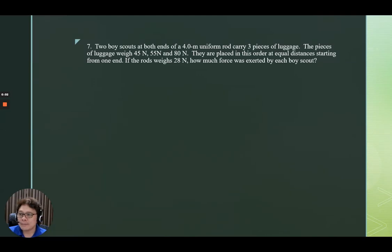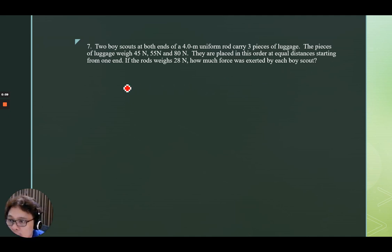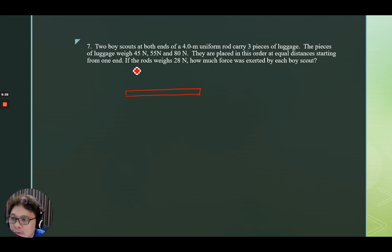Let's go to problem number seven. Two Boy Scouts at both ends of a 4.0 meter uniform rod carry three pieces of luggage. The pieces of luggage weigh 45, 55, and 80 newtons. They are placed in this order at equal distances starting from one end. So at equal distances — this rod is 4.0 meters.